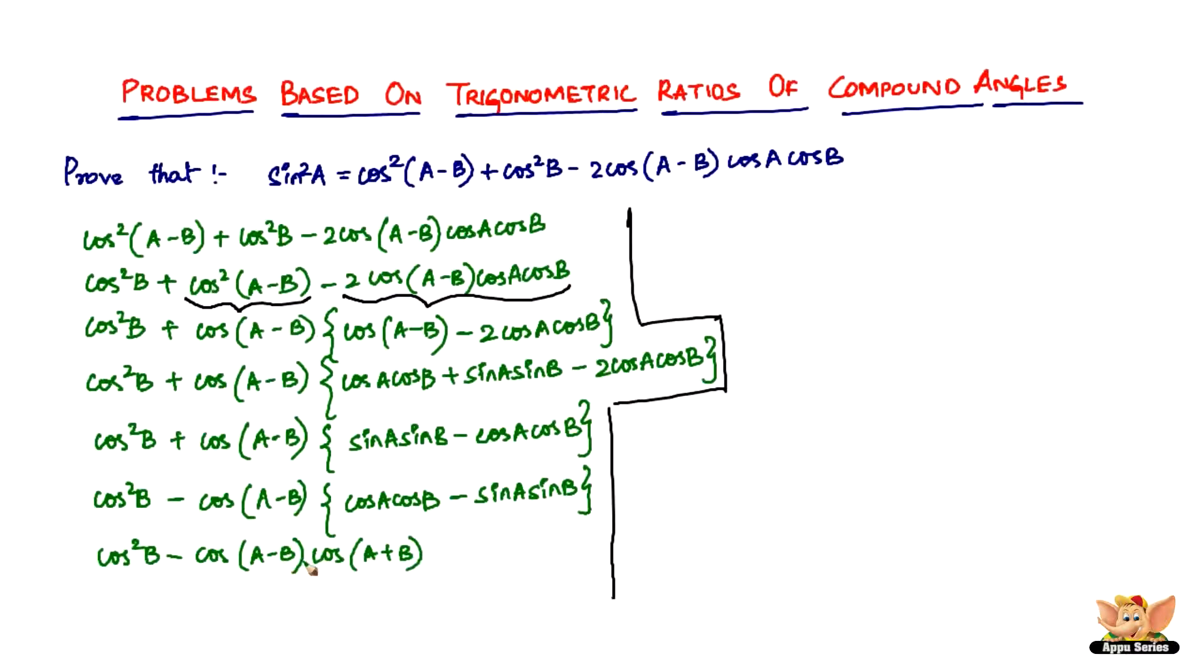Now this one we got to continue from here. So cos²B is going to remain cos²B. Now there's another formula that we used: cos(A-B) times cos(A+B) is nothing but cos²A - sin²B.